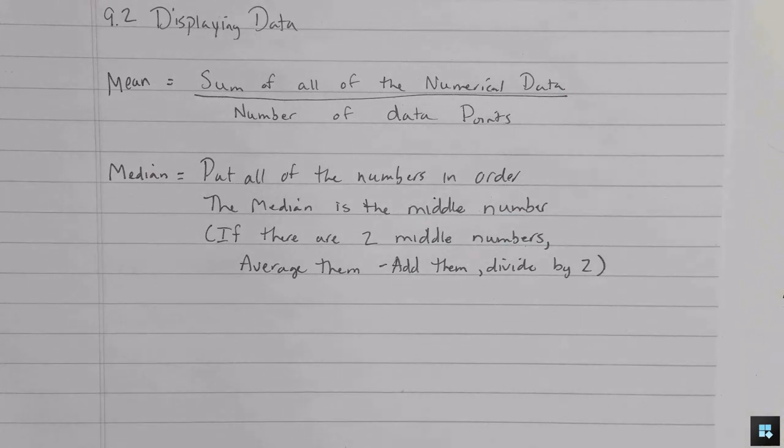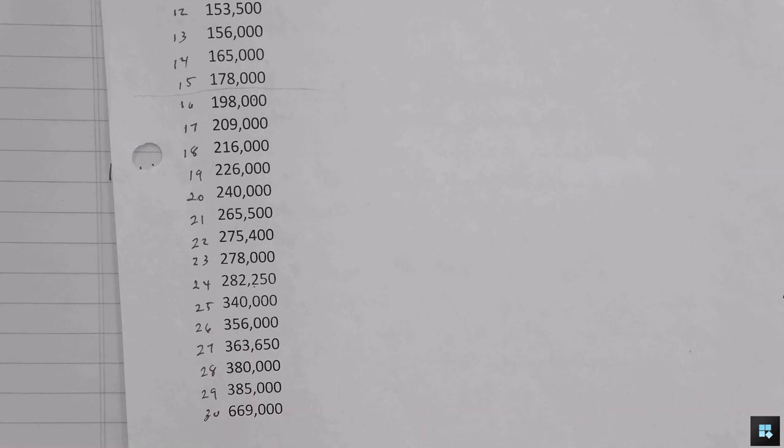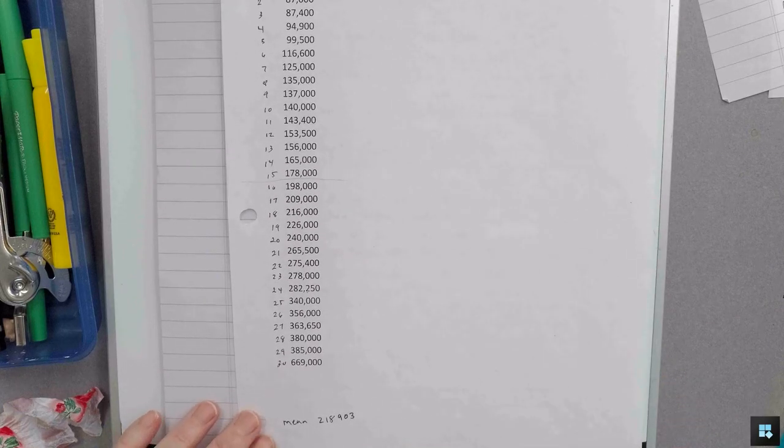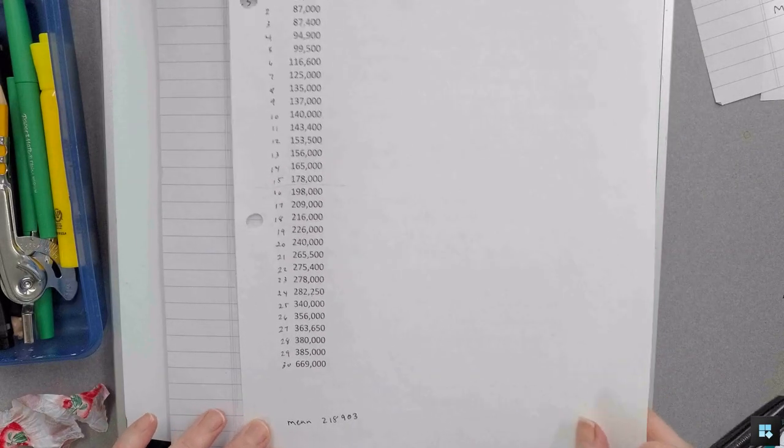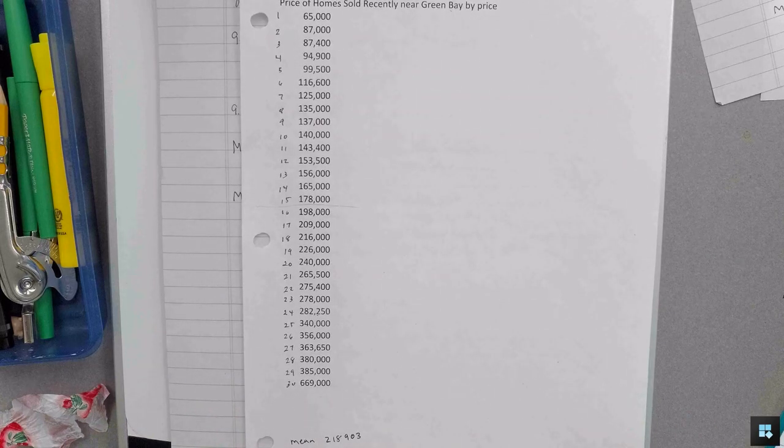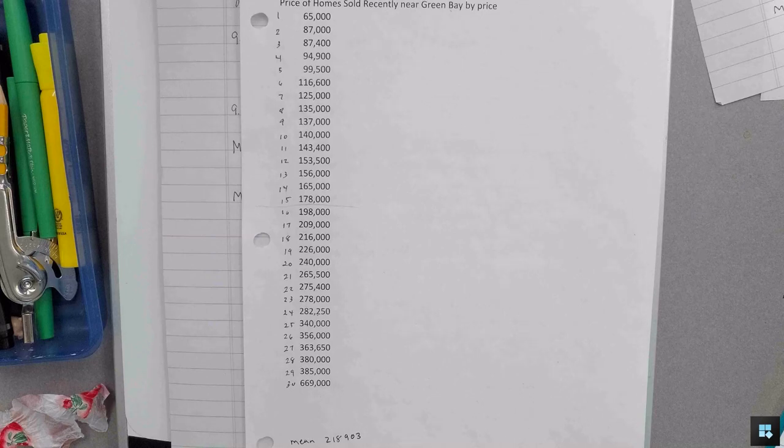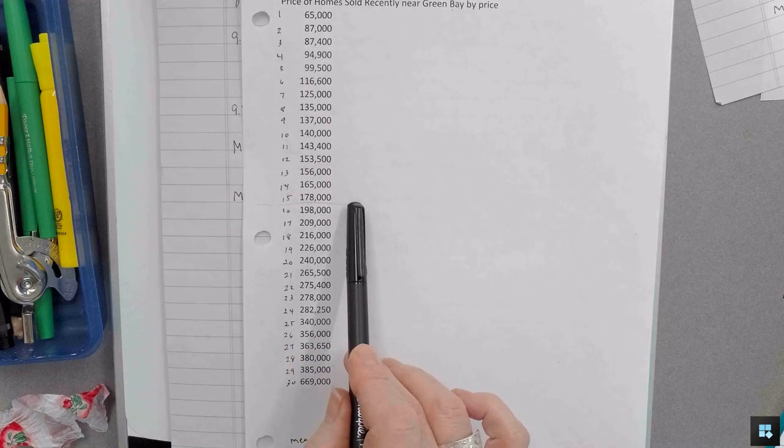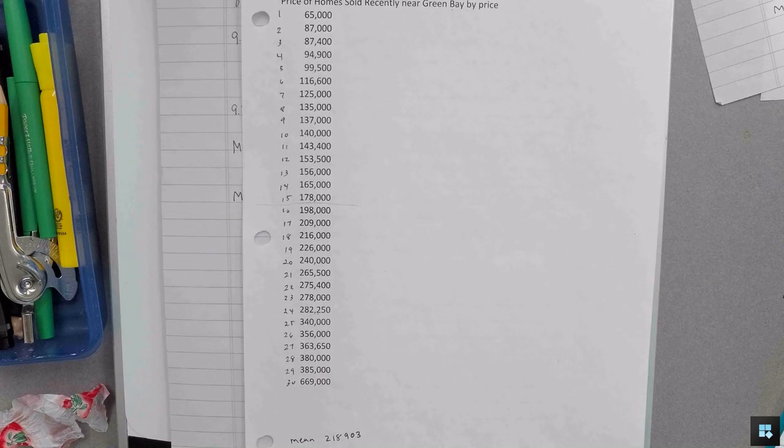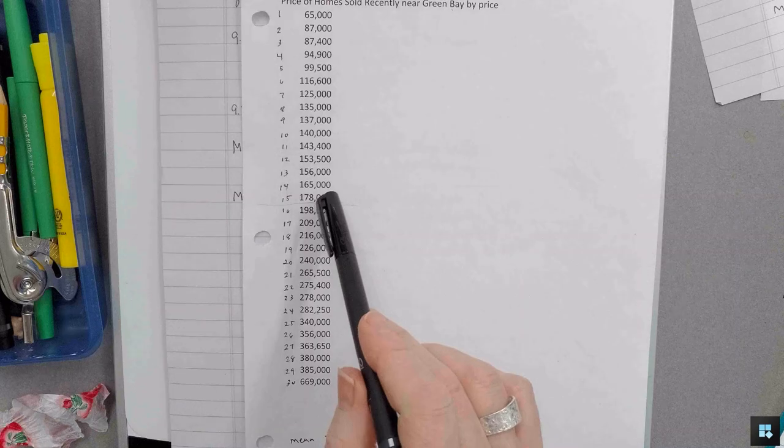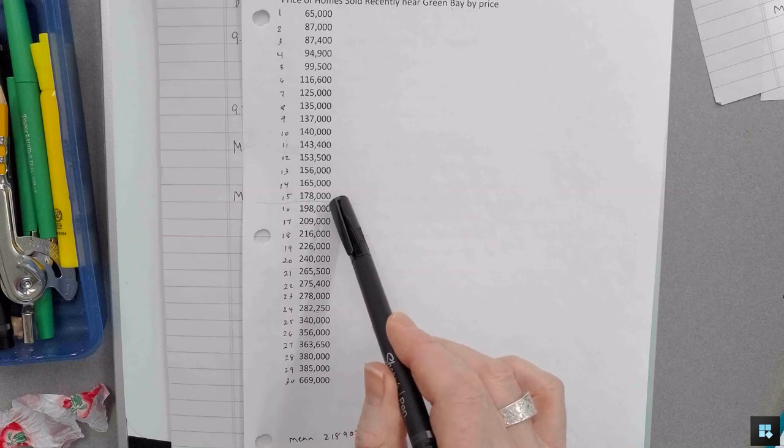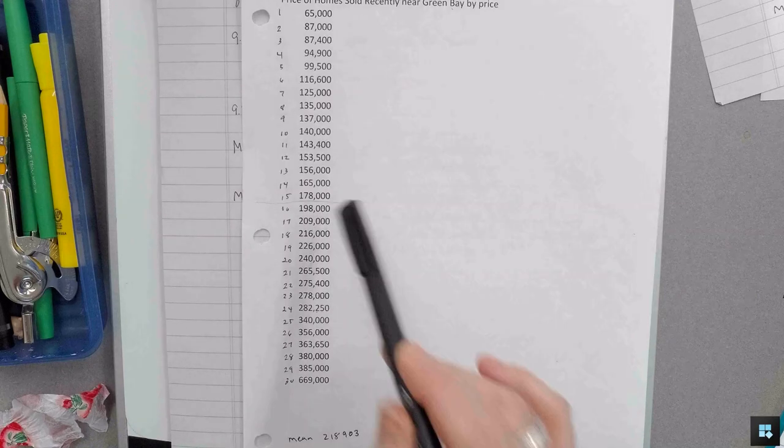So you'll hear both of these described as the average. So it's important to know which description of average is being used, the mean or the median. And it's nice to know if they're close together or not. Let's find the median on the price of these homes sold recently. So I did number them once I had them ordered. And there were 30. So since there's an even number, there's not going to be a middle number. So I drew a line down the middle. Above this line are 15 prices and below this line are 15 prices.